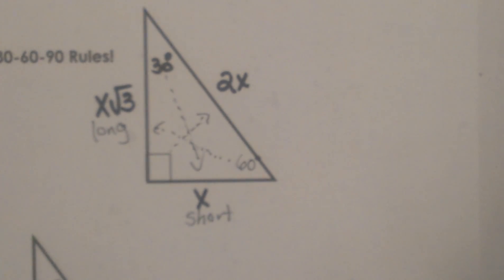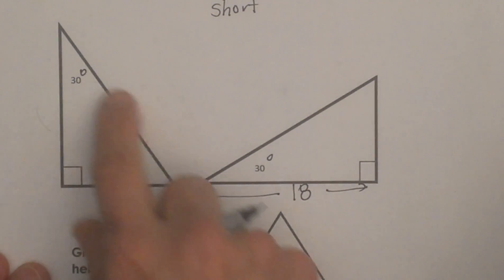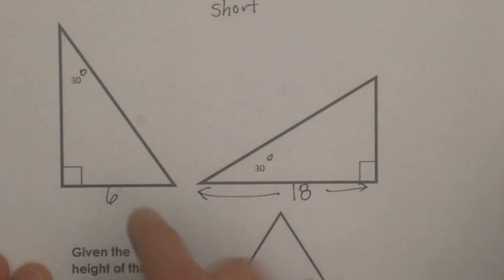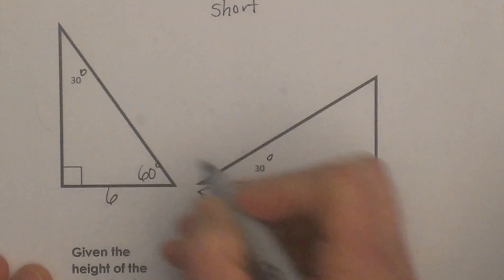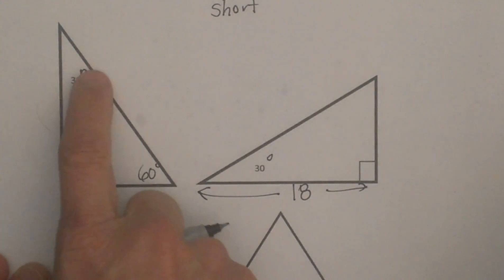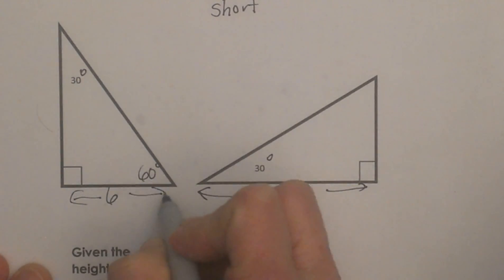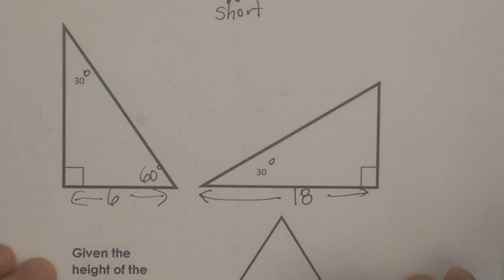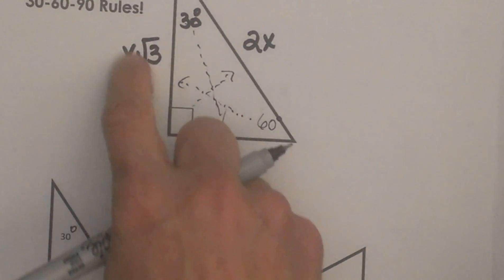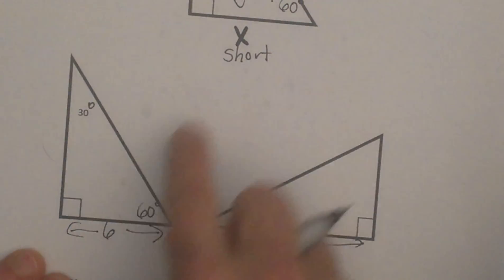Let's see this theorem in action. Here is our 30-60-90 triangle. The 30 degree angle is up here, this side is 6, and the angle over here must be our 60 degree angle. What are we given? Here is the smallest angle, so the opposite side — 6 — is our short leg. The value of x is 6.